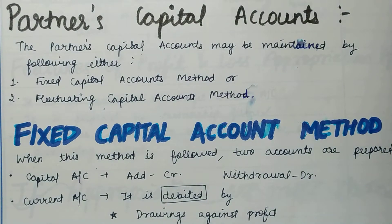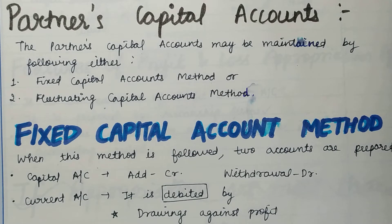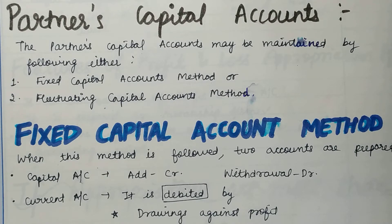What happens in a Partners Capital Account? In a partnership firm, there are more than one owners — the partners are more than one. Every partner has a separate capital account because each partner has separate transactions. Sometimes someone withdraws, sometimes someone uses the firm's resources, sometimes someone receives a salary or commission. That's why each partner has a separate capital account.